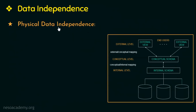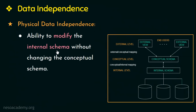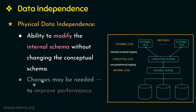The second type of data independence is physical data independence, which works between the internal schema and the conceptual schema. It is defined as the ability to modify the internal schema without having to change the conceptual schema. Changes to the internal schema could include changing the file location, the access paths, etc. This does not alter the conceptual schema as long as the same data is present in the database. Such changes may be needed to improve performance, for example to improve the retrieval speed of a particular record.